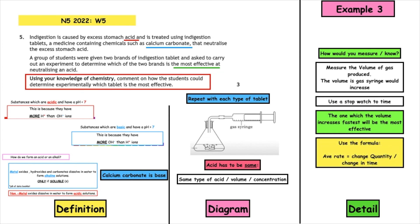You could go into a little bit more detail and talk about how you could work that out numerically. So you could use the formula: average rate is equal to change in quantity over change in time, and the units for this specific experiment would be centimeters cubed per second.